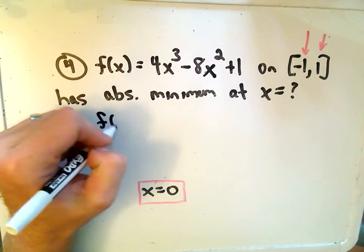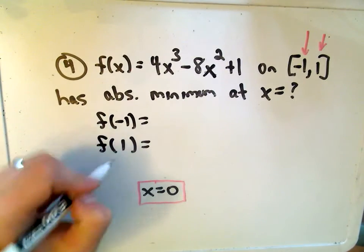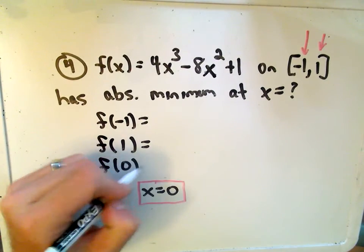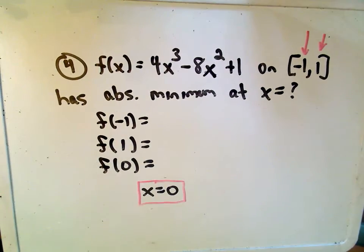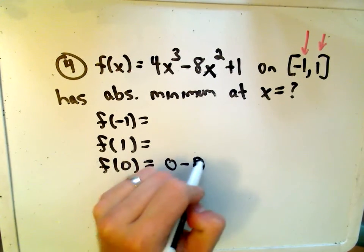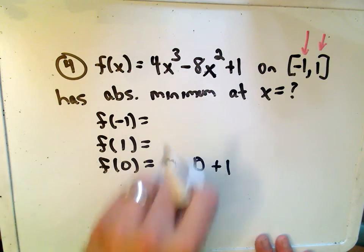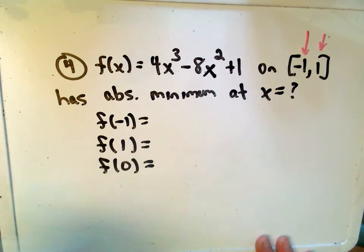So we have to evaluate the function at negative 1, we have to evaluate it at positive 1, and then we're going to have to evaluate it at 0, the one critical point that we kept. So if I plug in 0, we're simply going to get 0 minus 0 plus 1, or we'll just be left with positive 1 for f of 0, so that part's easy to compute.